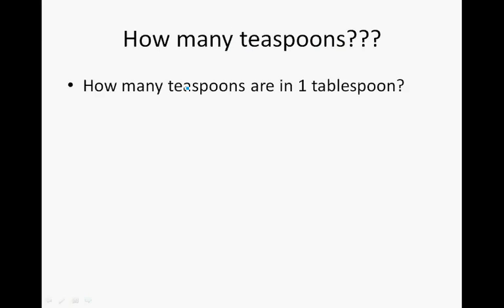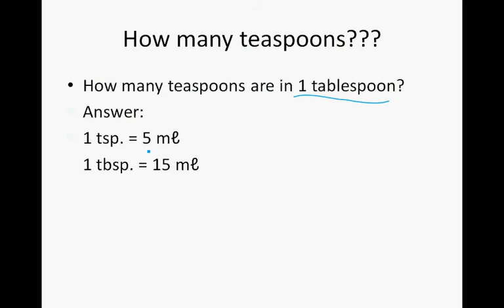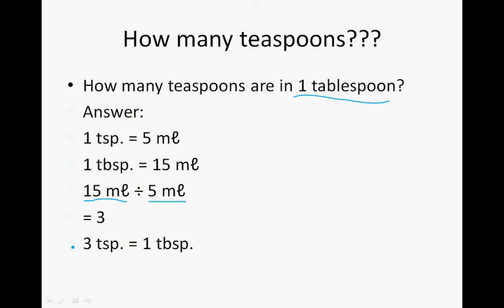How many teaspoons are in 1 tablespoon? Now, 1 teaspoon is 5 milliliters and 1 tablespoon is 15 milliliters. When we want to calculate how many teaspoons are in 1 tablespoon, we take 15 milliliters — the capacity of the tablespoon — and divide by 5 milliliters — the capacity of the teaspoon — and that gives us 3. So in 1 tablespoon there are 3 teaspoons. When a recipe calls for 1 tablespoon, we can actually use 3 teaspoonsful.